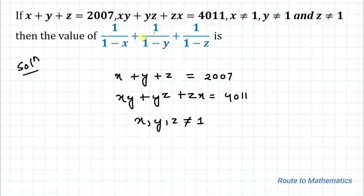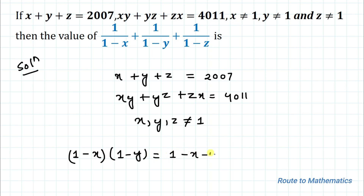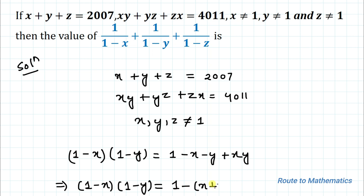In the first step, I'll multiply the first two terms of the denominator. By multiplying, we have (1-x)(1-y) equals, expanding each term: 1 minus x minus y plus xy. This implies (1-x)(1-y) equals 1 minus (x plus y plus xy). Let's take this as our first equation.